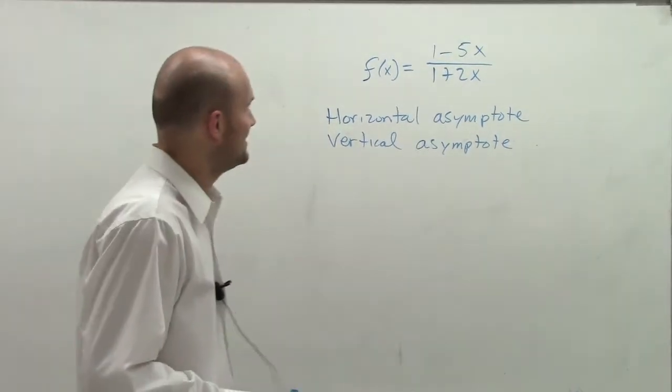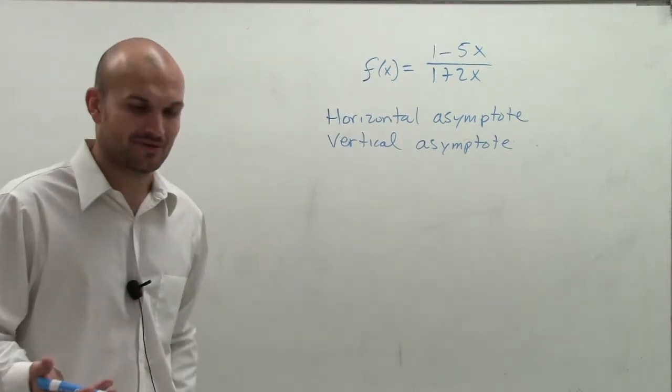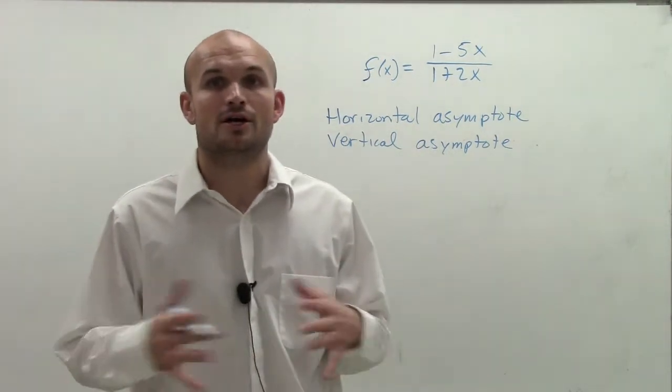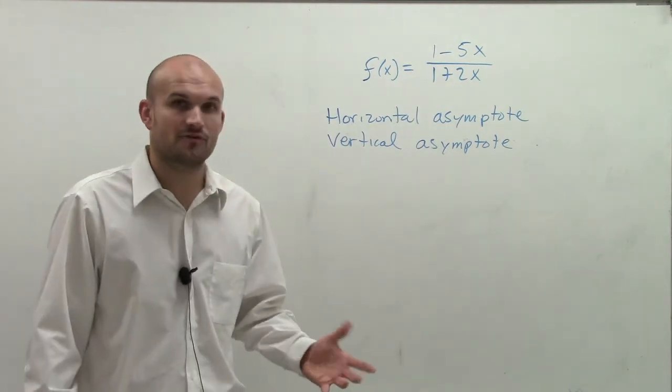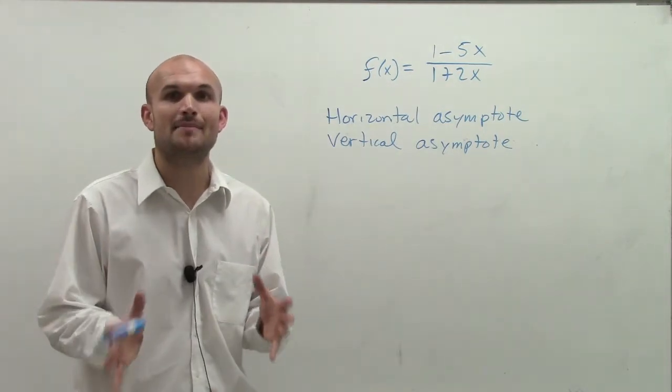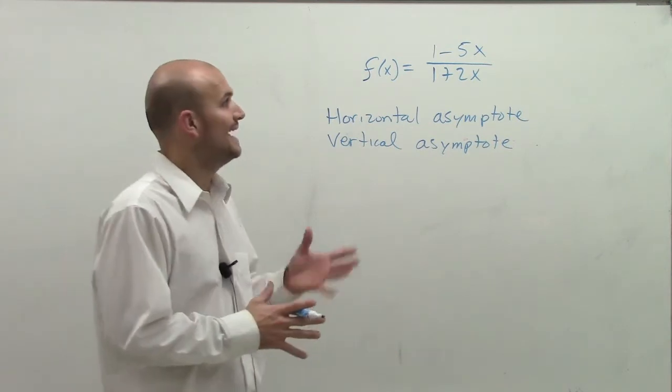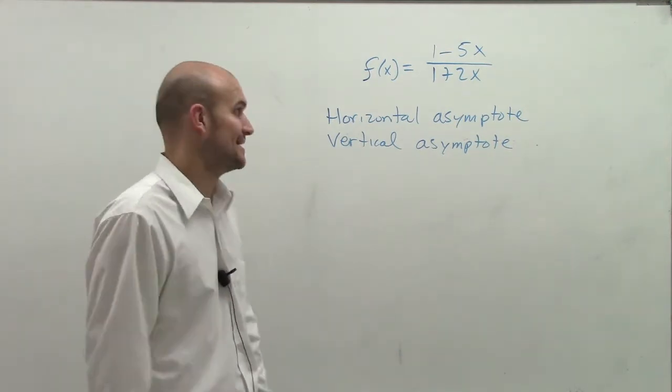So what we're going to do is we need to use our horizontal asymptote test. And that's the asymptote I'm going to try to find first. I like to always look at the horizontal asymptote first because all I need to do is apply my horizontal asymptote test and I can figure out what the horizontal asymptote is.